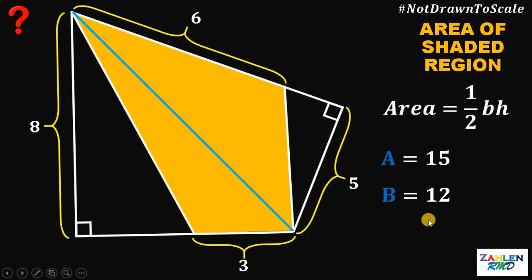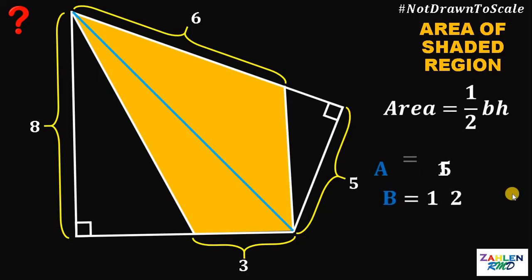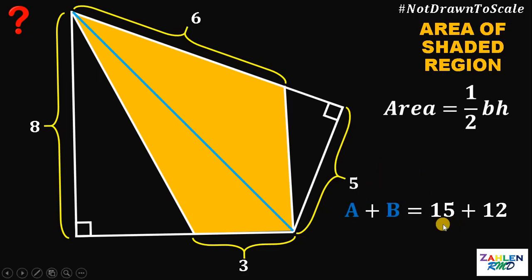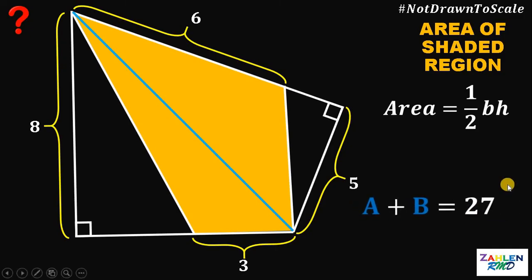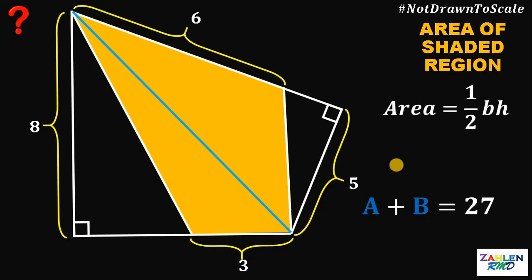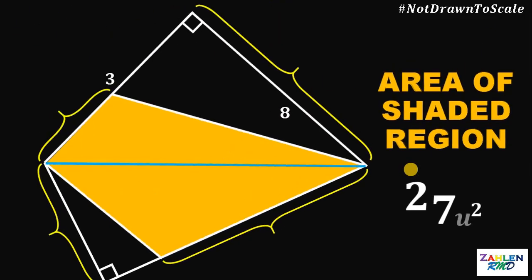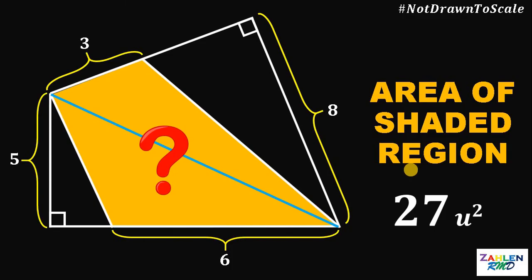We want the area of the shaded region. Therefore, we need to add region A and region B. This gives us 15 plus 12, and 15 plus 12 is 27. Therefore, the area of the shaded region must be equal to 27 square units. And as always, we are done. Goodbye.